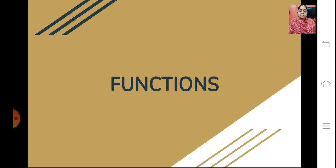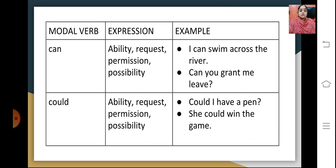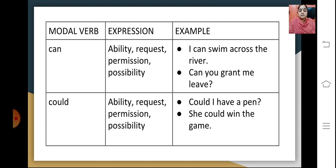Now let's go into the functions. We will deal with each modal separately. The first modal verb is can. Can expresses ability, request, permission or possibility. For example, 'I can swim across the river' shows ability. 'Can you grant me leave?' shows permission.